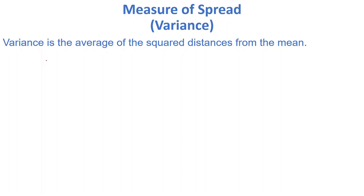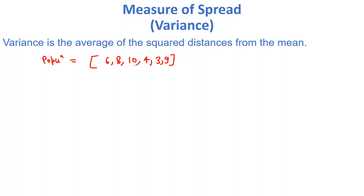Let's say we have some cities' population data. We have six cities: the first city has 6 million, the second city has 8 million, then 10 million, 4 million, 3 million, and the sixth city has 9 million population.